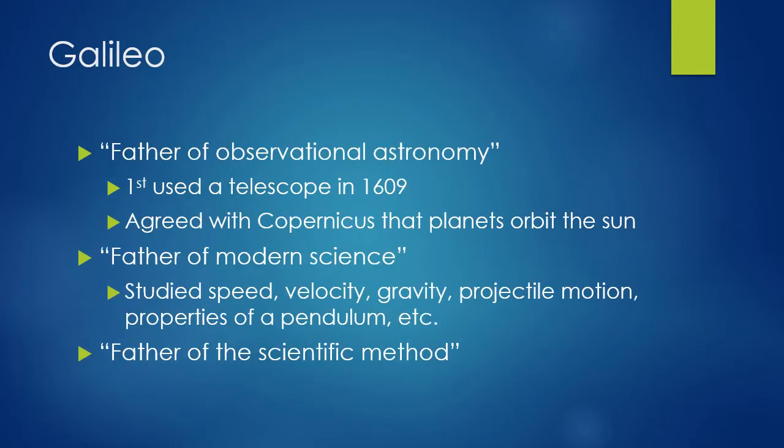The scientist we're going to focus on most in this chapter is Galileo. Galileo had many accomplishments in life. He was known as the father of observational astronomy because he first used a telescope in 1609. He also agreed with Copernicus that planets orbited the Sun. Up until this point, most people believed that the Earth was the center of the universe. Copernicus was one of the first to try to disprove that belief, with Galileo right along beside him.